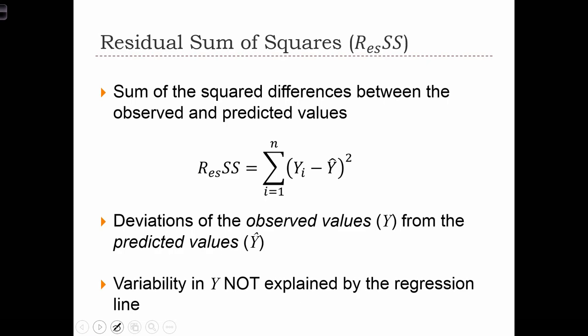Finally, we have the residual sum of squares. This is the sum of squared differences between the observed yi and the predicted y-hat. This is the same thing that we were calling earlier RSS equals the sum of ei squared. It's the sum of the squared residuals.